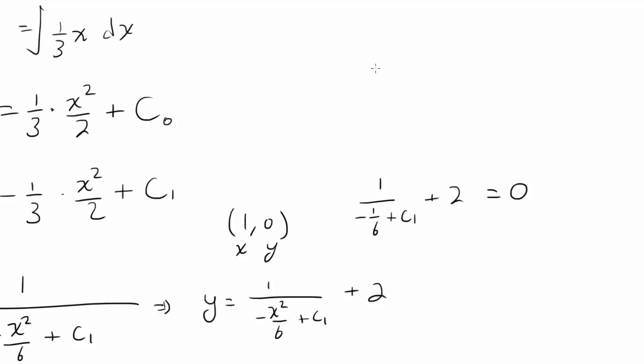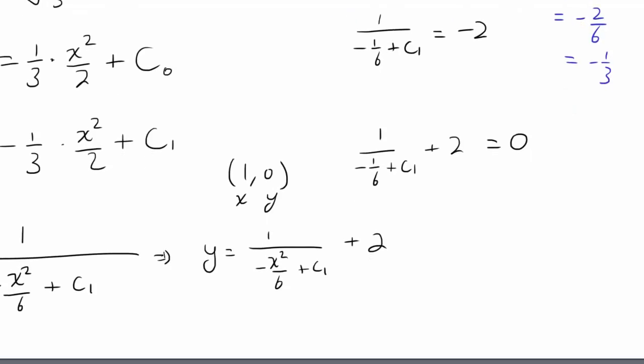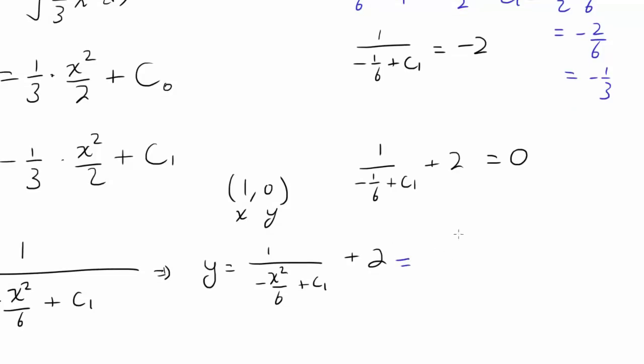Subtract 2 from both sides: 1/(-1/6 + C₁) = -2. Take the reciprocal of both sides, getting us -1/6 + C₁ = -1/2. And we can find C₁ as -1/2 + 1/6, also known as -2/6 or -1/3. So we know our equation is in the form 1/(-x²/6 - 1/3) + 2.